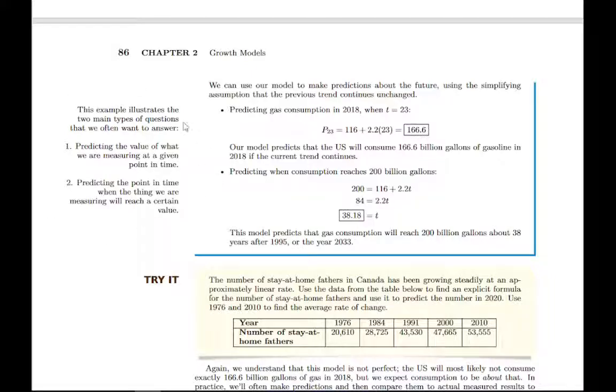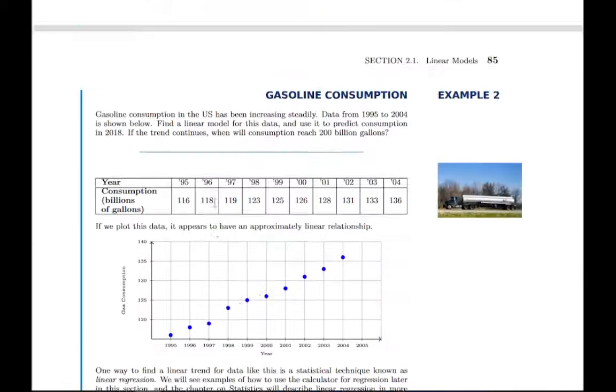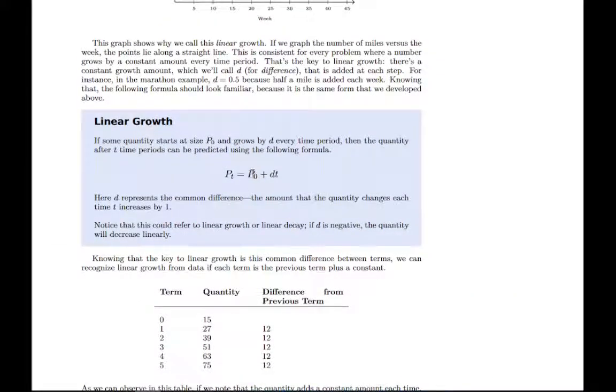This is important. Once you have a linear model, or really any model in this chapter, all of them basically have these two questions we want to answer. Generally the initial population is given, and then the growth rate is either given or we can find it. Once we have this model built, there are basically two variables. There's t, and there's this P of t, the future population. We can be given one and asked to find the other.